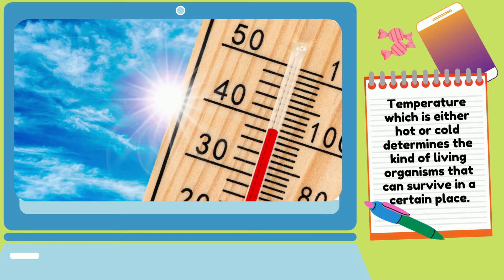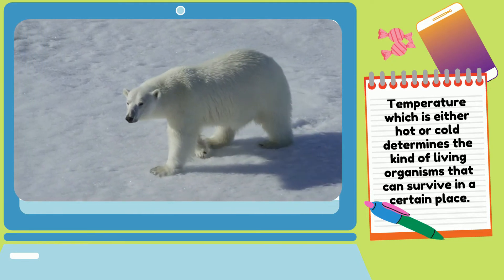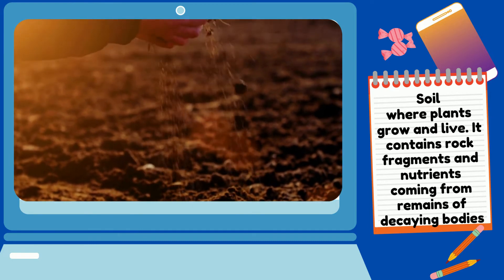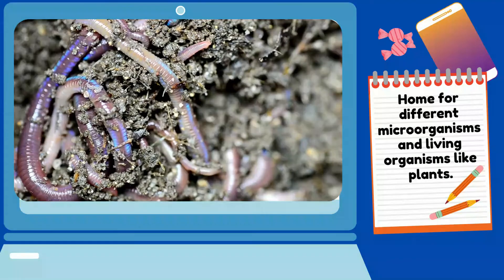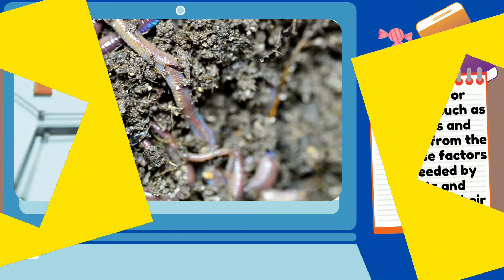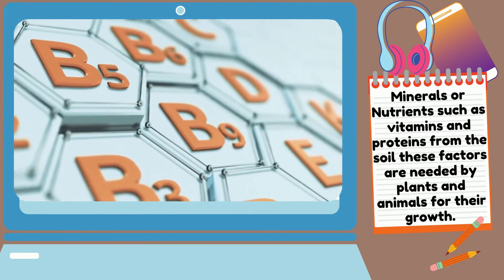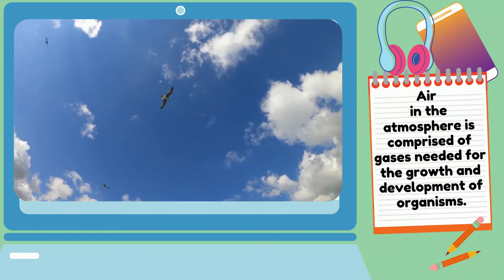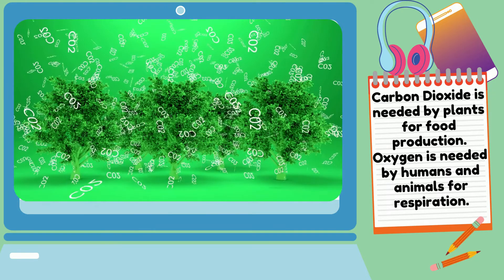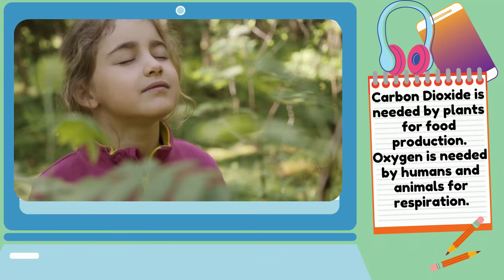Temperature, which is either hot or cold, determines the kind of living organisms that can survive in a certain place. Soil is an abiotic factor where plants grow and live. It contains rock fragments and nutrients coming from the remains of decaying bodies, and is also a home for different microorganisms and living organisms like plants. Minerals or nutrients such as vitamins and proteins from the soil are abiotic factors needed by plants and animals for their growth. Air in the atmosphere is comprised of gases needed for the growth and development of organisms — for example, carbon dioxide which is needed by plants for food production, and oxygen which is needed by humans and animals for respiration.